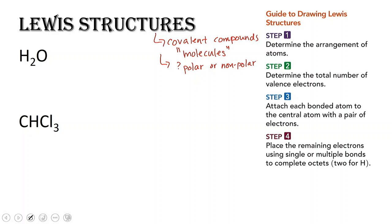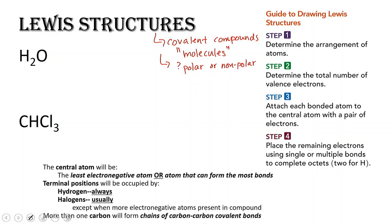The central atom is always going to be either the least electronegative or the one that can make the most bonds. Looking at the periodic table: Group 1A can make 1 bond, 2A can make 2, 3A can make 3 bonds. Group 4A can make 4 bonds. Group 5A can also make 3 bonds. Group 6A can make 2 bonds. And Group 7A can make 1 bond.